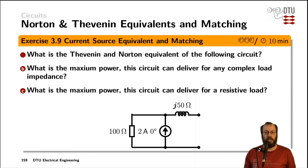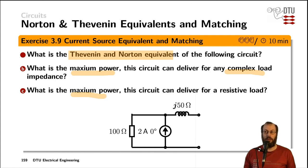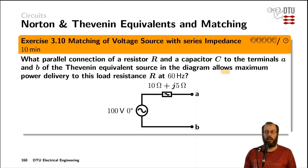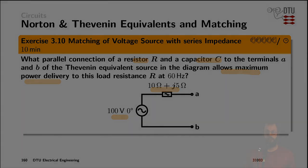You can now use your newly gained knowledge to calculate the Thevenin and Norton equivalent of the given circuit, calculate the maximum power the circuit can deliver for any complex load impedance and for a purely resistive load, and optimize the power delivery to a load circuit consisting of a parallel resistor and capacitor for the given source with its internal impedance. Thank you very much.